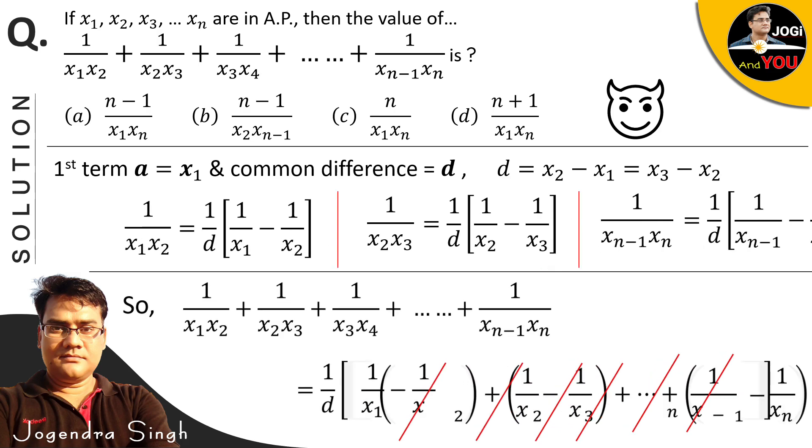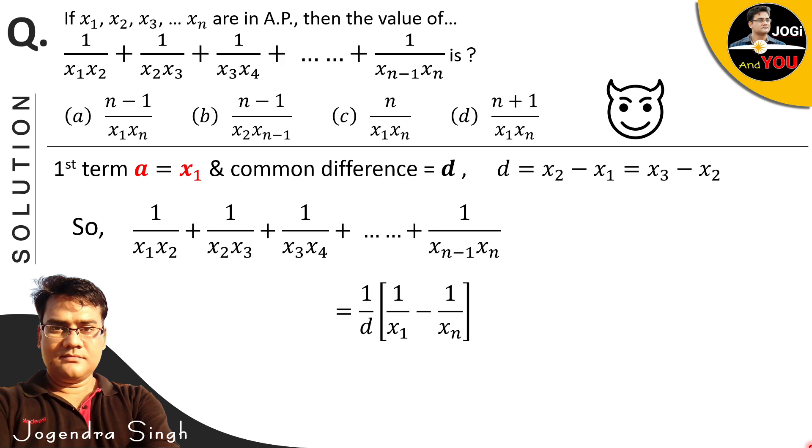This remains with us: (1/d)(1/x₁ - 1/xₙ). We will solve the bracket now. By taking LCM, we got this. And then what we got, look at this carefully. From here we will get our solution. Look, we have 1/d in bracket, what is there: (xₙ - x₁)/(x₁xₙ). This denominator that we have, x₁xₙ, for this we will look at the options.